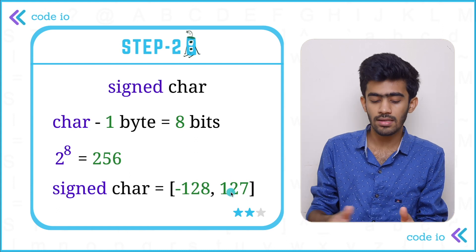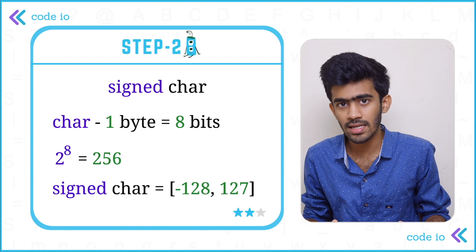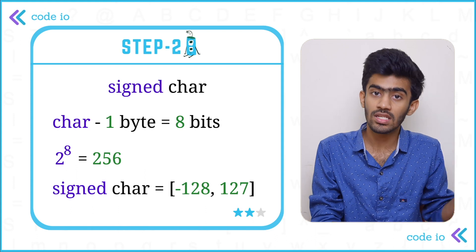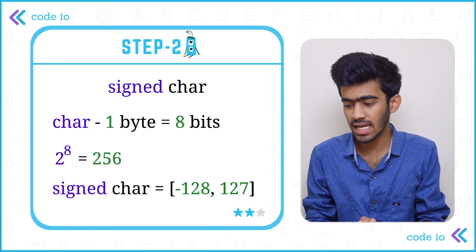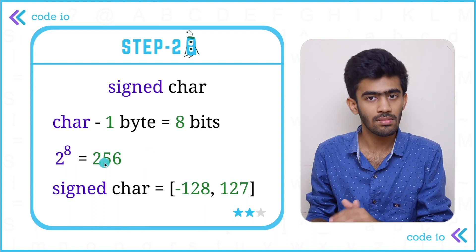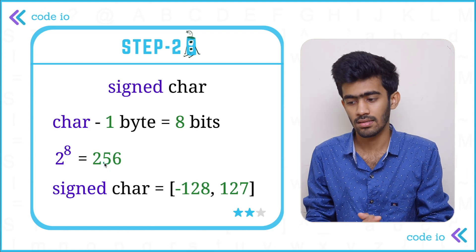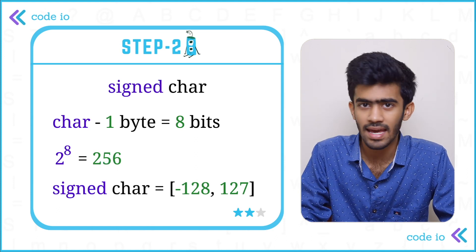So the positive numbers considered being 0 plus 127, so totally 128. Minus 1 to minus 128, there we have 128, and total they add up to 256. So this is the range of a signed character.